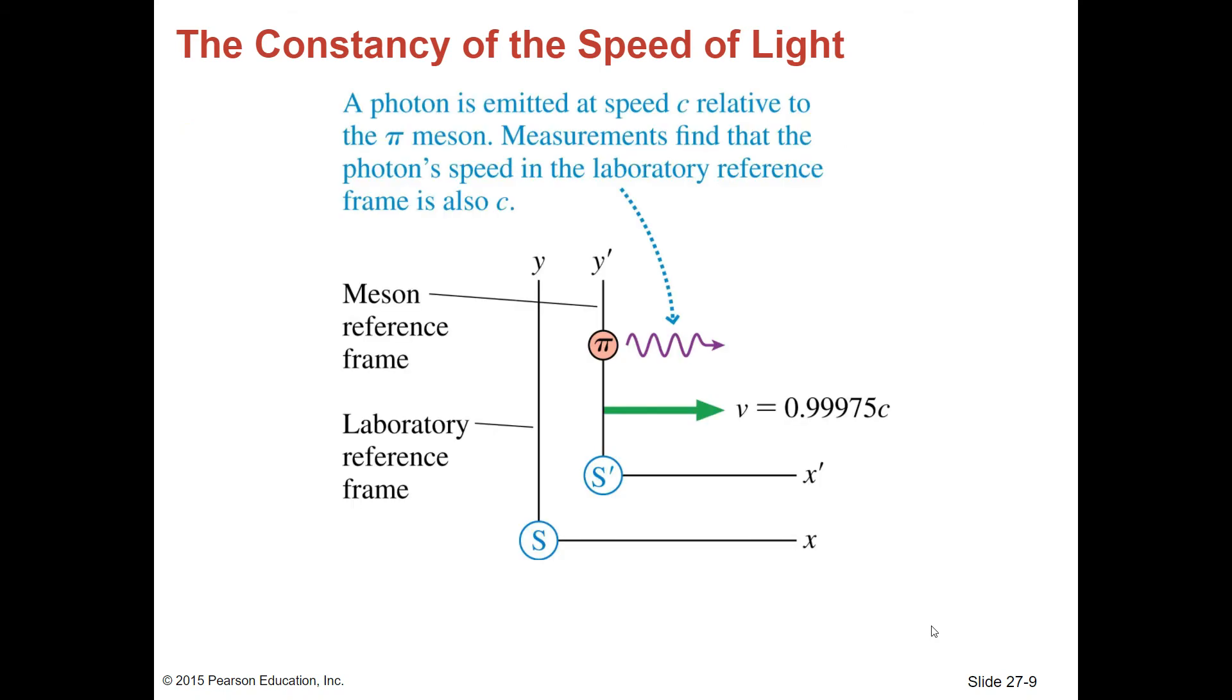Here a photon is emitted at speed C relative to the pi meson. Measurements find that the photon speed in the laboratory reference frame is also C. Experiments find that the photon travels through the laboratory with speed C.